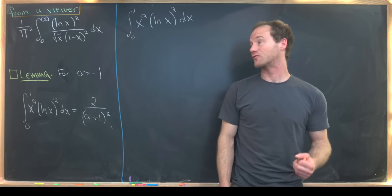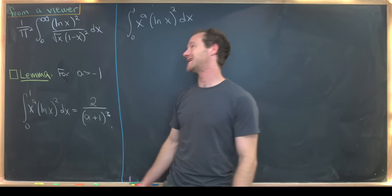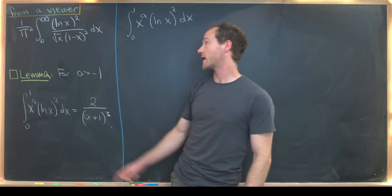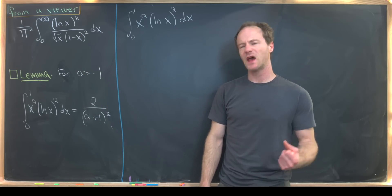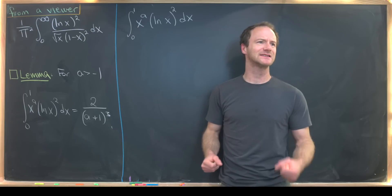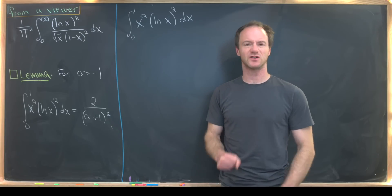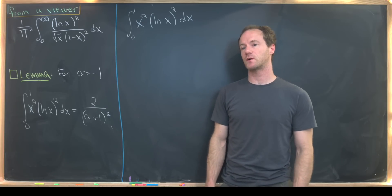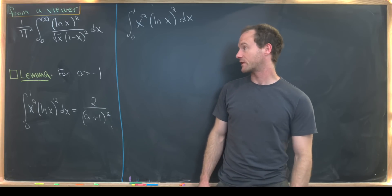Here we have a nice viewer suggested integral. We have 1 over π² times the integral from 0 to infinity of the natural log of x squared over the square root of x times 1 minus x squared. The fact that we have this 1 over π² really hints that we'll be looking at something like the sum of the reciprocals of the squares near the end, because it's well known that the sum of the reciprocals of the squares equals π² over 6.